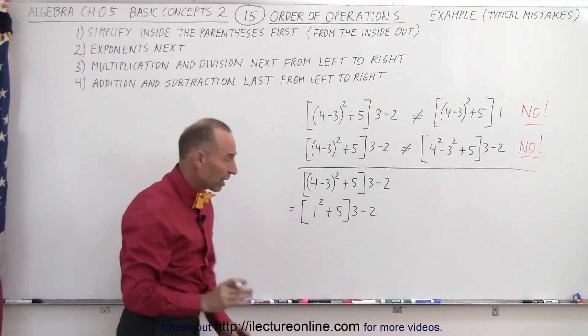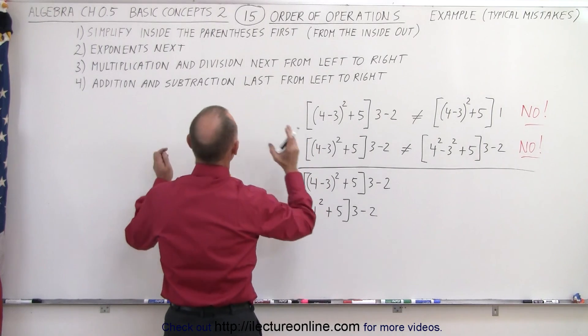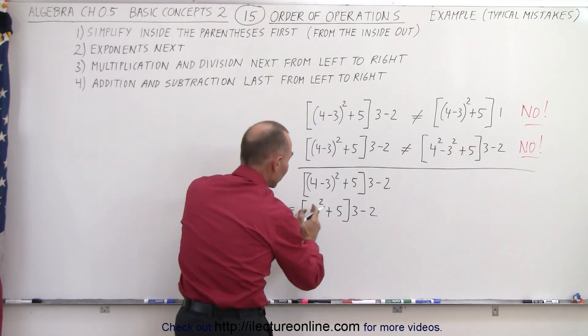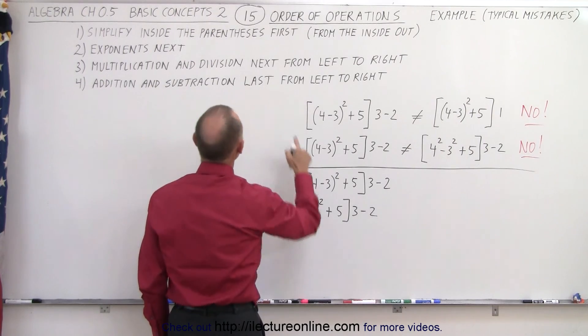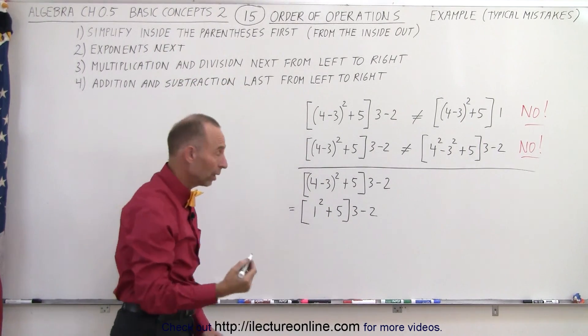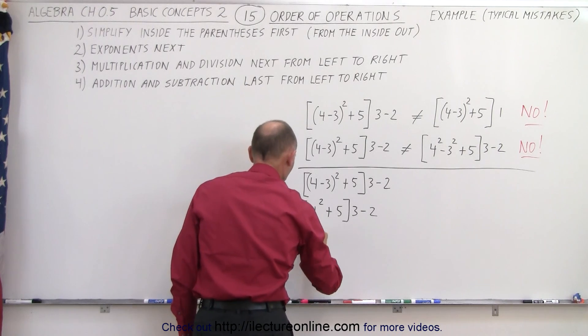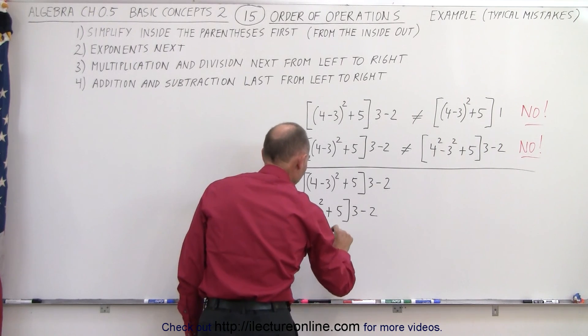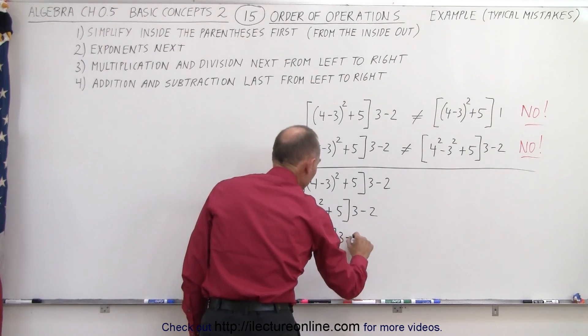We still concentrate on what's inside the brackets because we work from the inside out. We want to simplify what's inside the brackets and do exponents first. So we have 1². 1 times 1 is 1. So this can now be written as (1+5) times 3 minus 2.